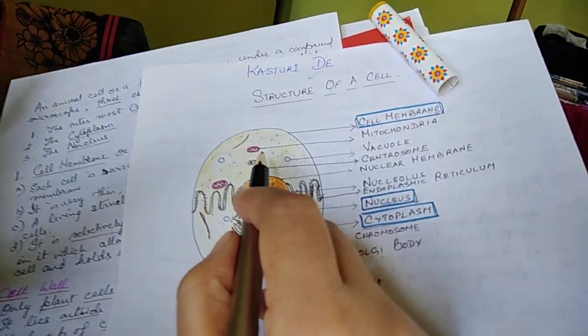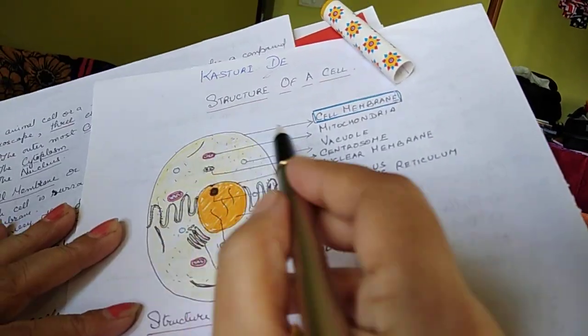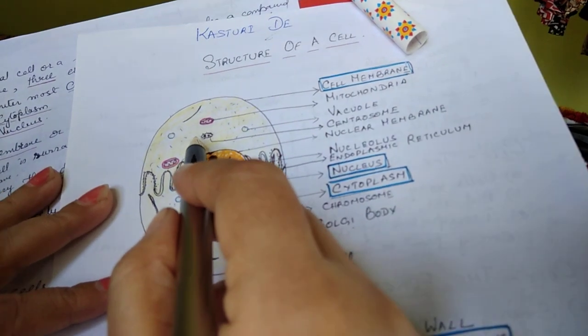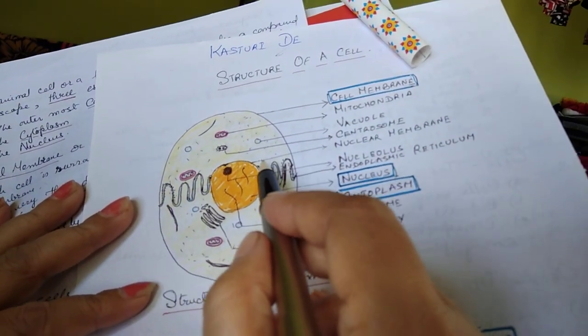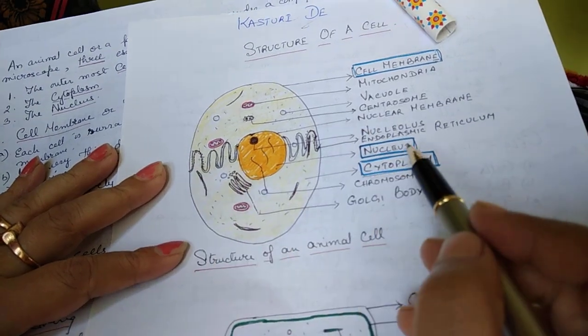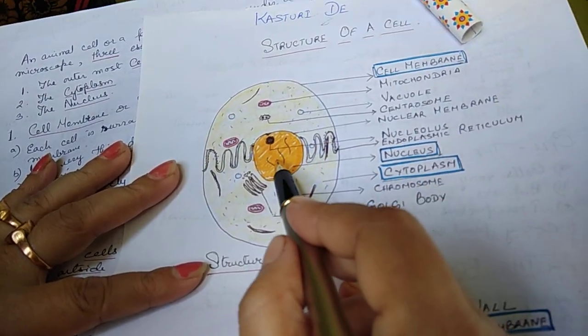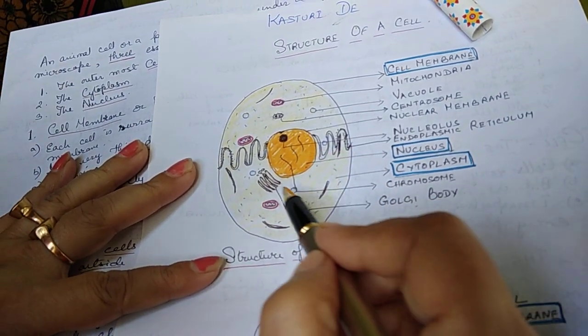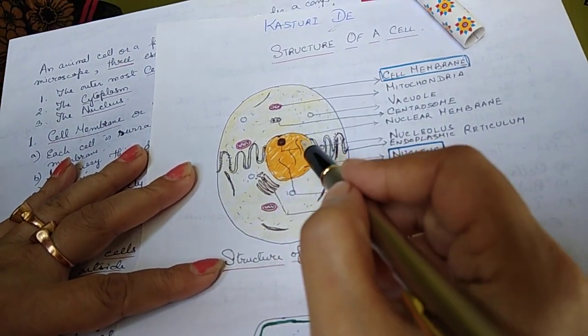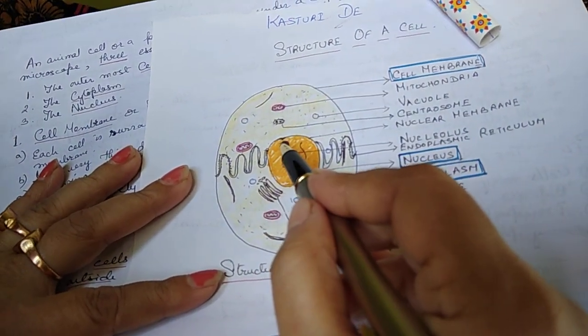Like the mitochondria, the vacuole, the centrosome, the Golgi bodies, Golgi apparatus, then endoplasmic reticulum, then these chromosomes are there in the nucleus, nucleoplasm is there, nucleolus is there. These are the things present in both the cells.